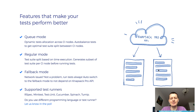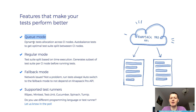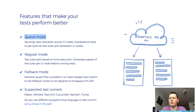Another interesting thing that Knapsack can do is called Queue mode. It's dynamic test allocation across CI nodes. Why can this be useful? Let's say you have feature specs that use Capybara, and the nature of these tests is that they have quite random performance. Sometimes a single test file can take maybe a few seconds, and sometimes it can take a few — maybe even dozens of seconds. I also noticed when I talked to multiple teams that some CI providers offer servers with quite random performance.